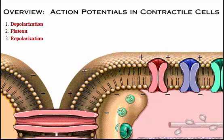Let's look at an overview of action potential generation in contractile cells. Once threshold is reached, the action potential starts with depolarization. During the plateau period, ion movement balances out and the membrane potential doesn't change much. Then repolarization begins and the membrane potential returns to its resting state.